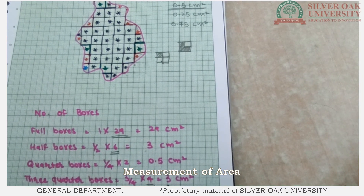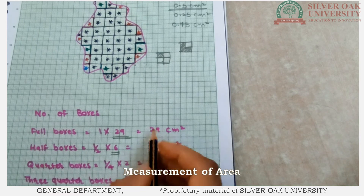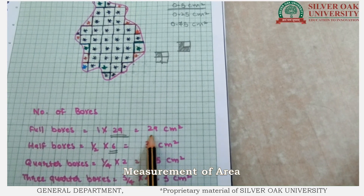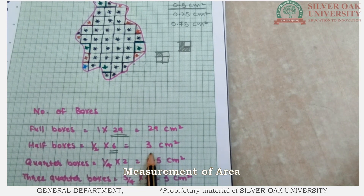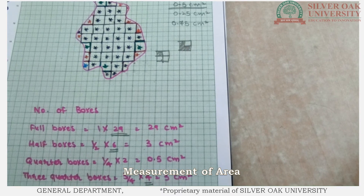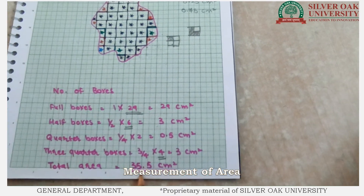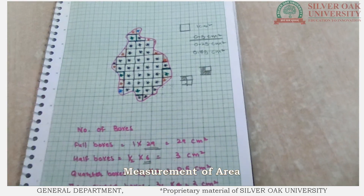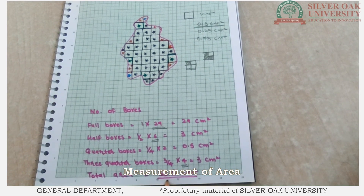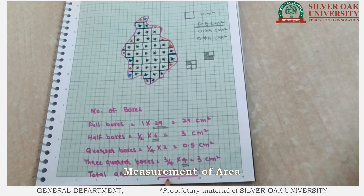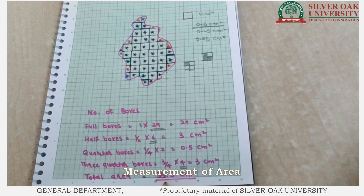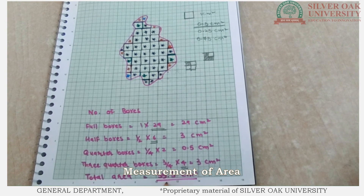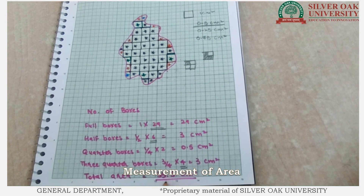Now we simply add all the areas: 29 plus 3 plus 0.5 plus 3, which gives a total area of 35.5 centimeter square for this irregular shape. By this method, you can calculate the area of an irregular shape using the graphical method. Thank you.